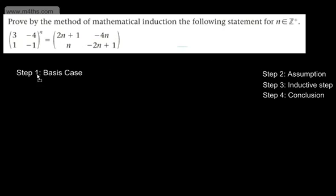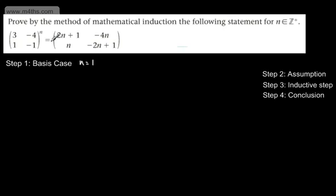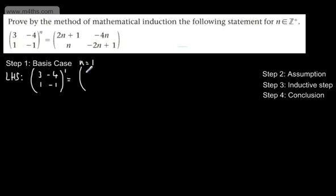We start with our basis case, letting n equal 1. We sub this into the left-hand side of the equation: we get the matrix (3, -4; 1, -1) to the power of 1, which quite clearly gives us (3, -4; 1, -1).